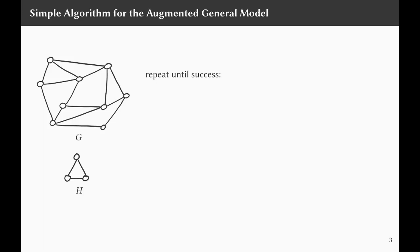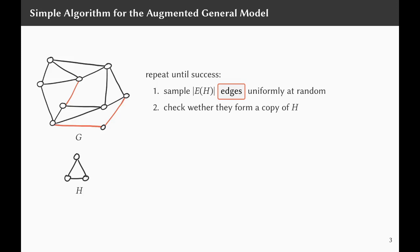For a quick start, let's look at a very simple algorithm for sampling in the augmented general model. The algorithm repeats the following until success: it samples as many edges uniformly at random from the input graph as there are edges in the subgraph H, then checks whether these edges form a copy of H. For example, if our subgraph is a triangle, the algorithm might sample the red edges on the left side and check whether these form a triangle.